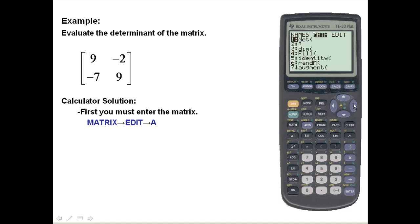I'll scroll over to edit, and A is already highlighted, and I'm going to edit matrix A. I'm going to press enter. If you already have values in your matrix, we're going to overwrite these values, so it'll be okay.